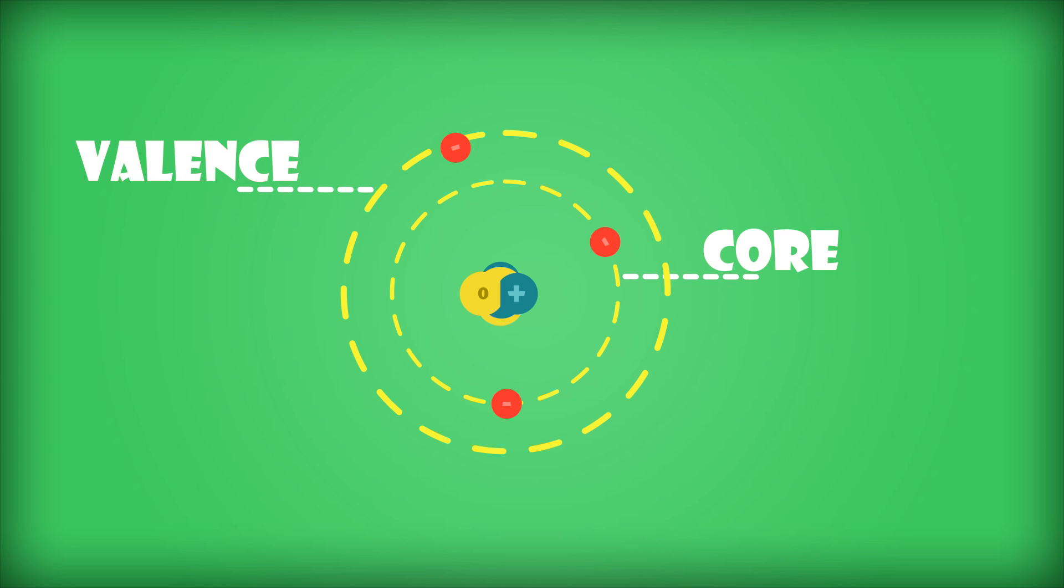Before we go into ionic bonds, we need to learn about why bonds actually form. The electrons in an atom are of two types: valence electrons and core electrons. Valence electrons are electrons in the outermost shell, while core electrons are located in the inner shells. Chemical reactions happen when atoms lose or gain valence electrons, while core electrons are not involved in bonding or any chemical reaction.